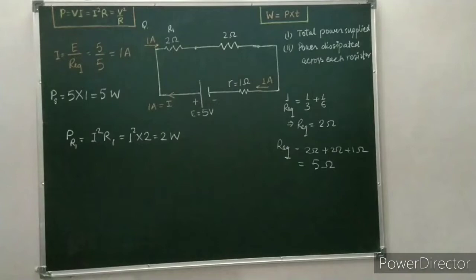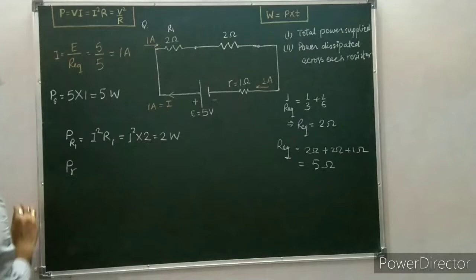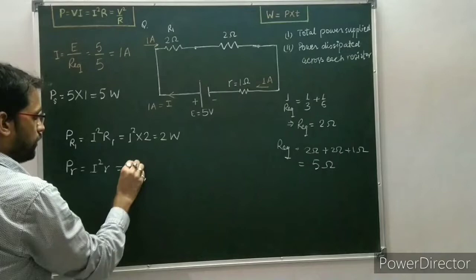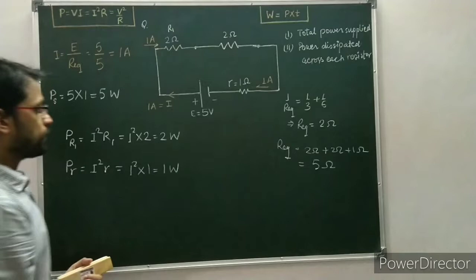Now we can calculate the power across the internal resistance in the same way. The power across internal resistance is P = I² × r. The current flowing through the internal resistor is 1 ampere, so P = 1² × 1 = 1 watt.